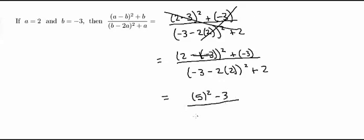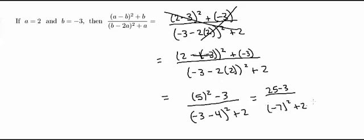All over negative 3 minus 4 quantity squared plus 2. So this is equal to 25 minus 3 over negative 7 squared plus 2. So this is equal to 22 over 49 plus 2. And I'm going to move this up here and that's going to give you 22 over 51.